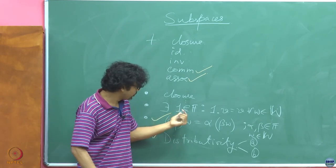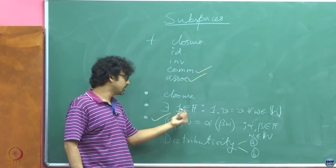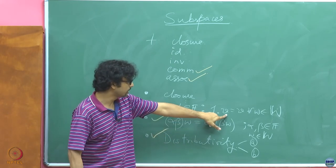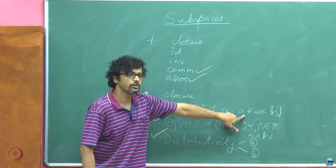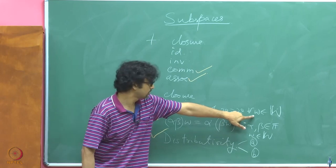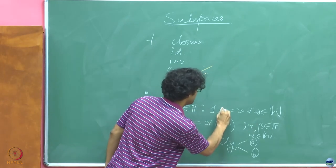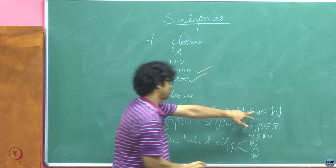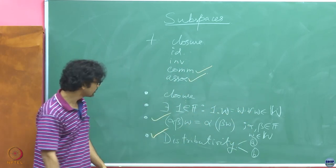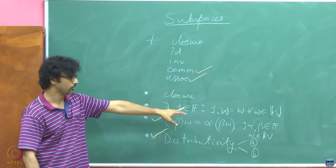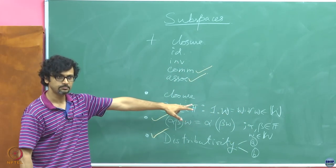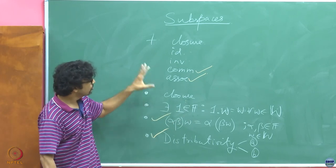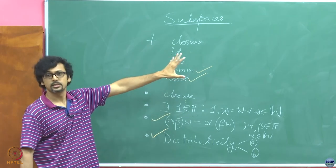You have to figure out that a scalar from the field acting on an element of W must give you back an element of W. So this result should belong to W. Now we have to propose such a scheme.